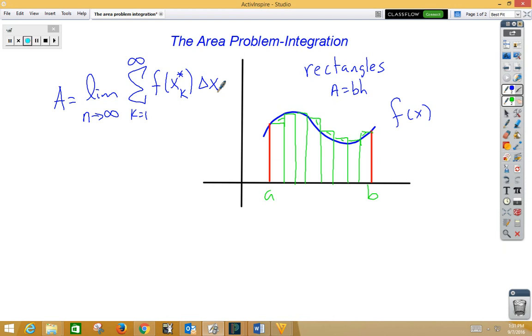So reviewing this very quickly, we have an infinite number of rectangles, and we're going to add—since sigma means sum—and here we have Δx is the base of every rectangle, and this is the height of every rectangle, which matches our formula. Area is base times height.